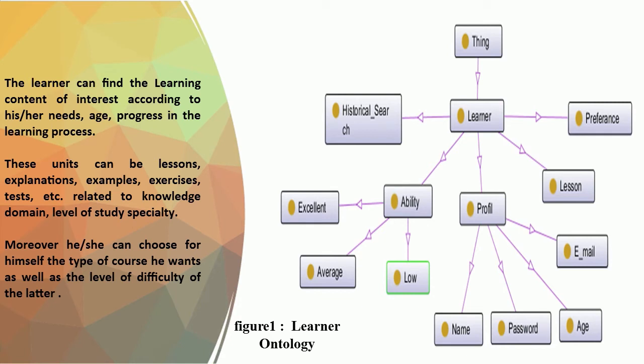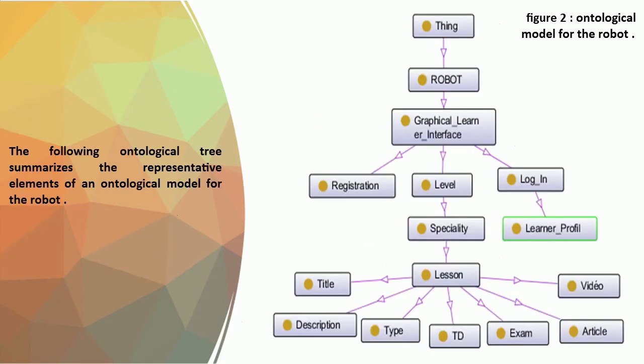For example, when a learner is studying, his or her learning activities are stored in history. The learner can find learning content of interest according to their needs, age, and progress in the learning process. The ontological tree summarizes the representative elements of an ontological model for the robot.